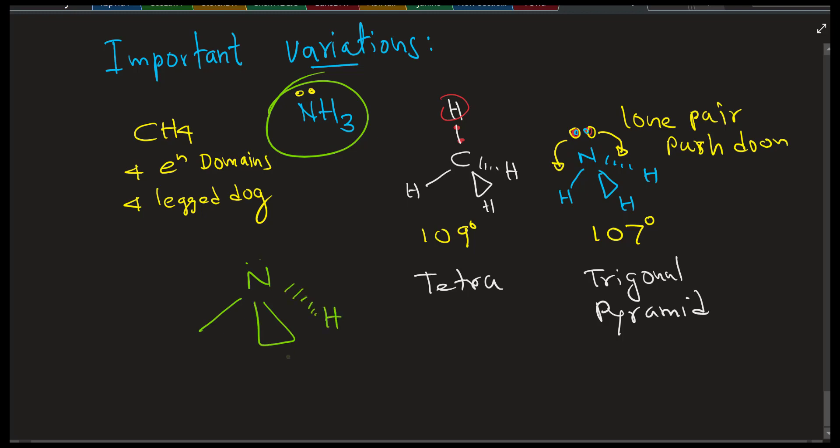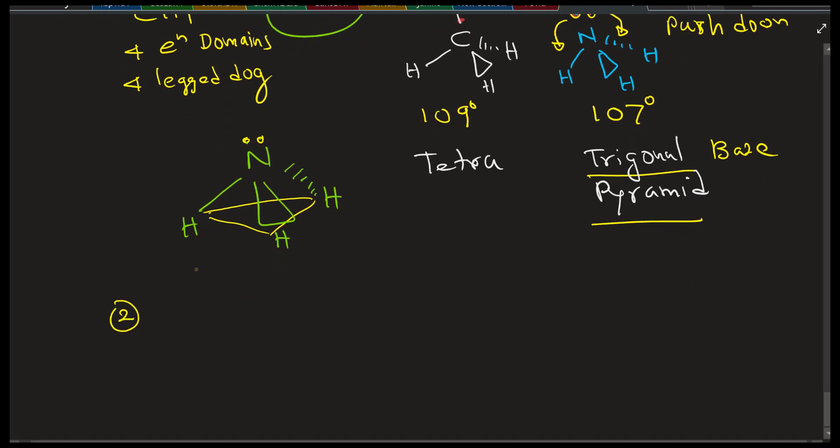On the head, the hydrogen is gone. It will become trigonal pyramid. So this is NH3 ammonia. Now it has a lone pair. It has a trigonal base pyramid, and it has a 107 angle because of the lone pair push. That's what you have to learn.